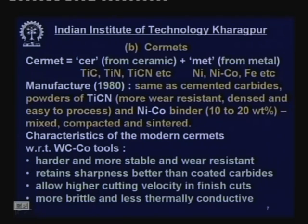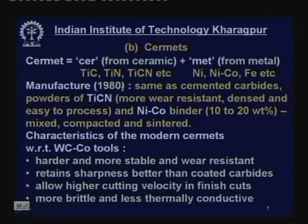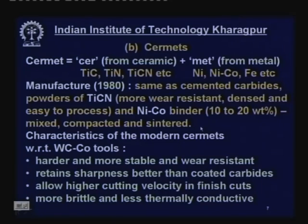Cermets are manufactured in the same way as cemented carbide tools — by a powder metallurgical process. The concept came long ago, but since 1980 there have been drastic improvements. Powders of titanium carbon nitride — which are more wear resistant, dense, and easier to process than titanium carbide and titanium nitride — combined with 10 to 20 weight percent nickel-cobalt binder are mixed, compacted in a die, and sintered at appropriate temperature and soaking time.